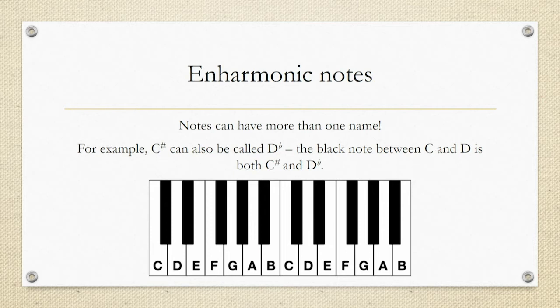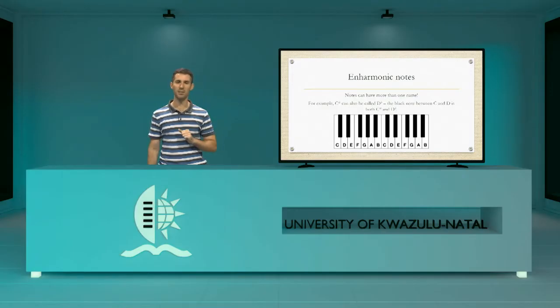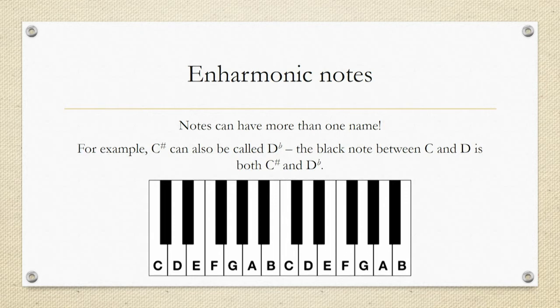We have a special name for notes — particularly the black notes — that can have two names. The black note just next to C could be C sharp if you're looking at it from the direction of C, or D flat if you're looking at it from the direction of D. One note has two names. When that happens we call it an enharmonic note. So all of the black notes can be enharmonic notes. For example, the black note just above F could be F sharp from F's perspective, or G flat from G's perspective because it goes up a step from F but down a step from G. So F sharp is also G flat — that's an enharmonic note.